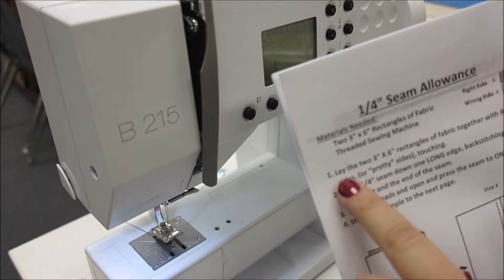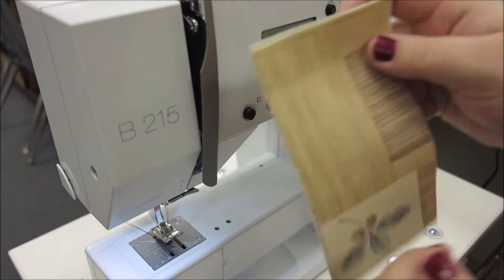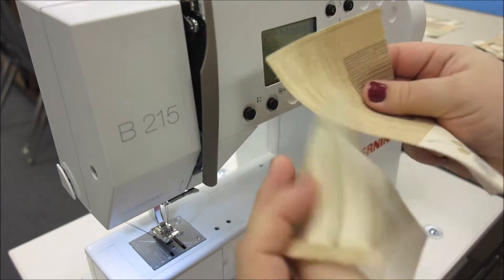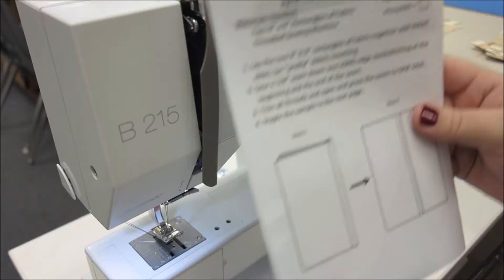So as I read my first instructions, lay two three-by-six rectangles together with the right side touching. So I'm going to take two more rectangles and I'm going to put them right sides touching or pretty sides touching. The next instruction says,